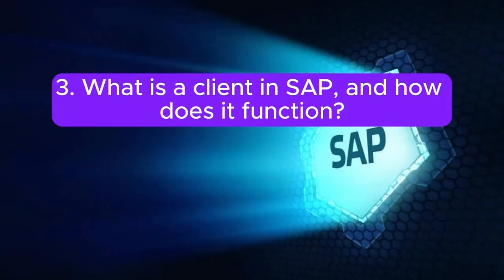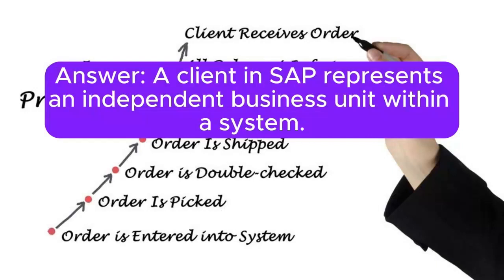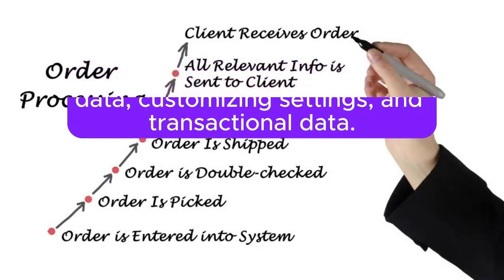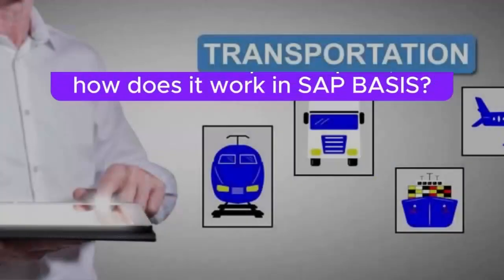Question 3: What is a client in SAP and how does it function? A client in SAP represents an independent business unit within a system. It contains its own set of master data, customizing settings, and transactional data. Clients ensure data segregation and security within the system.